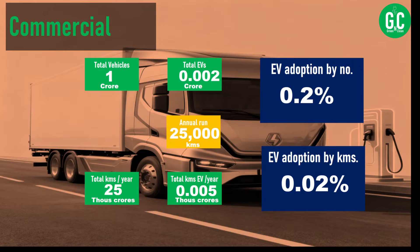For commercial vehicles — trucks, vans, tempos, and so on — there are 1 crore vehicles, of which around 20,000 are EVs. The EV adoption rate by number is only 0.2%. Considering 25,000 kilometers run annually for these vehicles, the EV adoption rate by kilometers is just 0.02%.